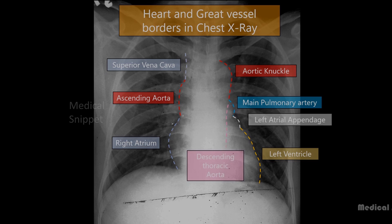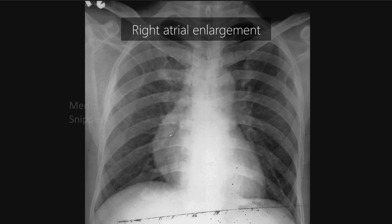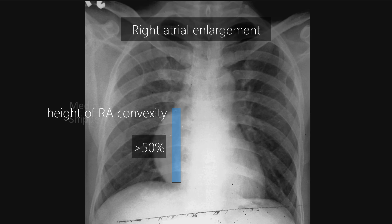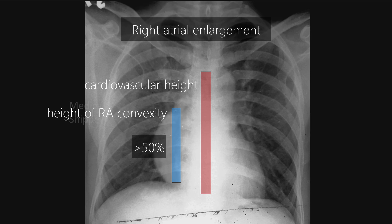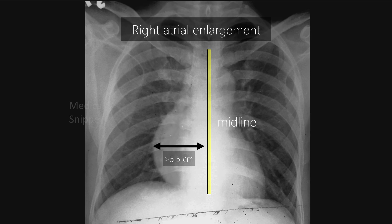Now let's see how to assess chamber enlargement in chest X-ray. We can only assess the gross enlargement of the right atrium in chest X-ray. If the right atrial convexity is more than 50% of the cardiovascular height, then right atrial enlargement is present. Also, if the right atrial margin is more than 5.5 cm from the midline, there is right atrial enlargement.